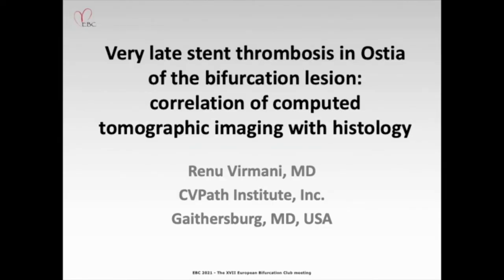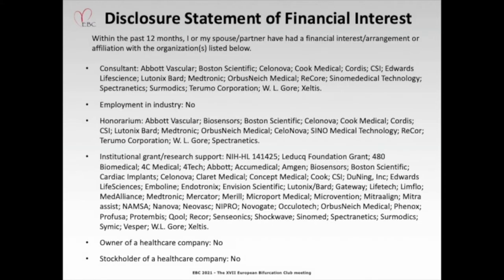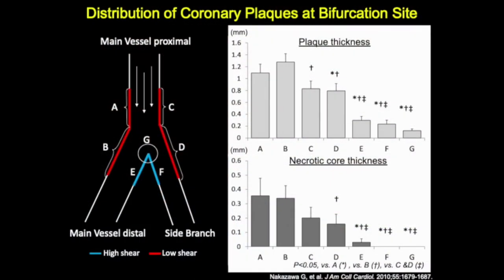Dear chairman, thank you for the invitation to present at the EBC meeting 2021. My talk is on very late stent thrombosis in osteo-bifurcation lesions — correlation of computed tomographic imaging with histology. I'd like to start with where atherosclerosis forms at bifurcation sites. As shown, the sites marked A, B, C, and D are regions where atherosclerotic plaques form. On the other hand, EGNF — the region of the carina — is spared from any lesion formation.